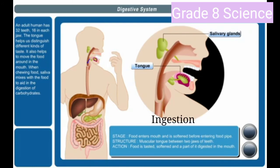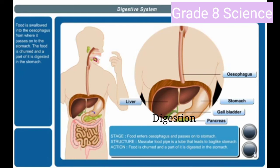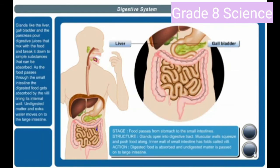Food saliva mixes with the food to aid in the digestion of carbohydrates. Food is swallowed into the esophagus, from where it passes on to the stomach. The food is churned and a part of it is digested in the stomach. Glands like the liver, gallbladder, and the pancreas produce digestive juices that mix with the food and break it down into simple substances.